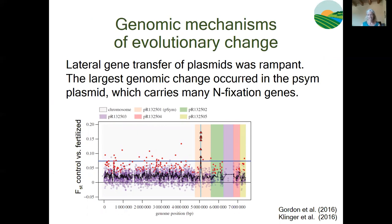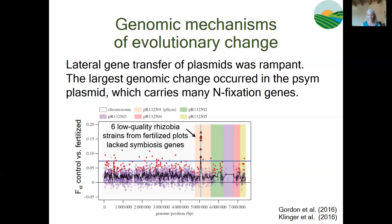This plot shows FST values across the rhizobia genome, with genome position along the x-axis. FST analyses revealed significant genetic differentiation between the rhizobia populations that had evolved in the nitrogen addition treatments and those that had evolved in the control plots. The genetic differences were greatest for six genes on the pSym plasmid, which can be laterally transferred among bacteria and also carries a number of nitrogen fixation genes. Thus, rhizobia strains from plots with a long history of fertilization had lost some capacity to fix atmospheric nitrogen, explaining the reduction in their benefits to plants.